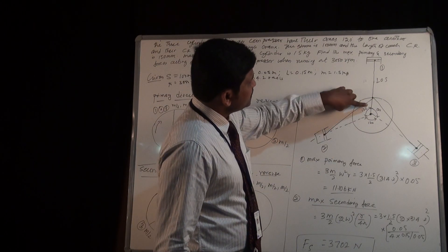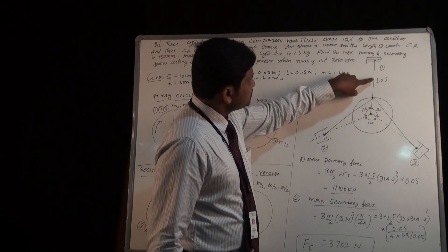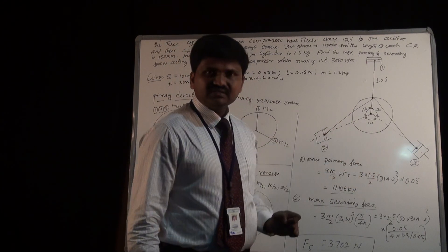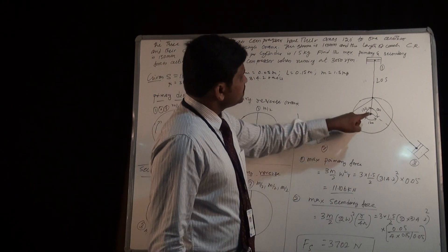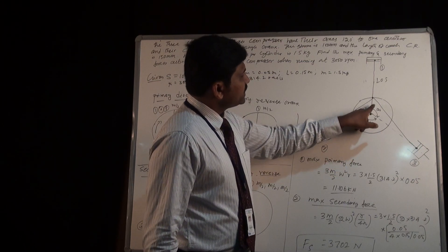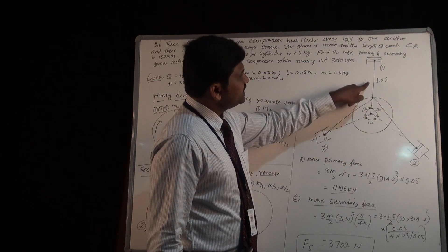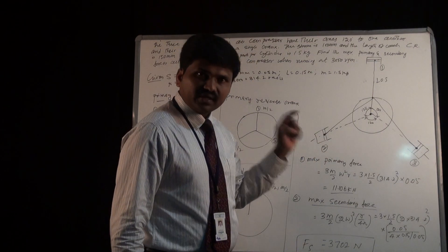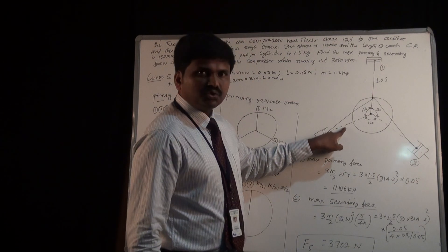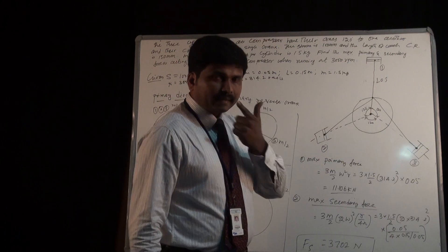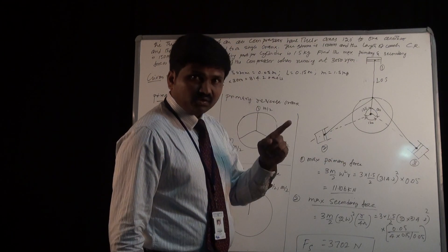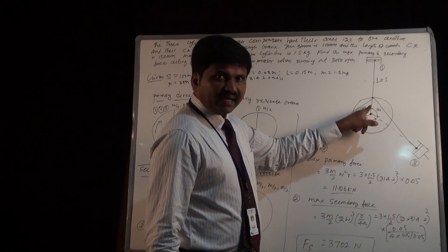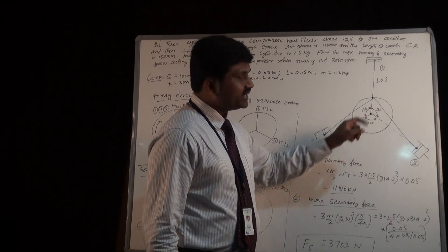This is the common crank. This is the line of stroke of cylinder 1, line of stroke of cylinder 2, and line of stroke of cylinder 3 — all connected to the common crank. The angle of the common crank with the line of stroke of cylinder 1 is 0 degrees, with cylinder 2 it is 120 degrees, and with cylinder 3 it is 240 degrees.